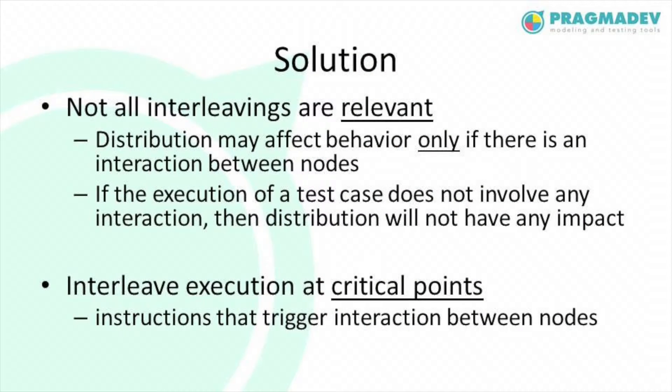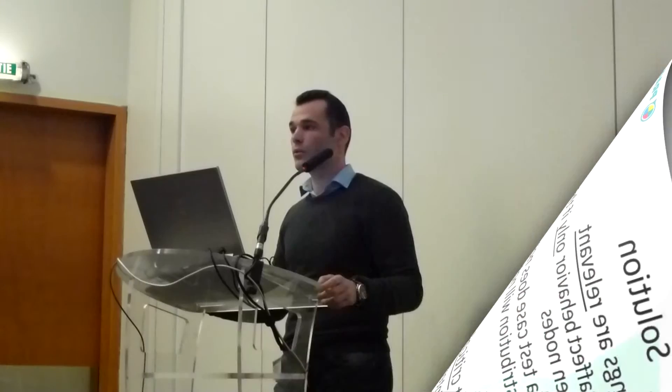We should only focus on points of the test case that actually trigger a distributed interaction between nodes. If the execution of the test case does not involve any interaction, then the distribution will have no impact. For example, if a client test case does not trigger any interaction with the server, it is not worth investigating that scenario. On the contrary, if clients have heavy communication with the server, then it is worth investigating.